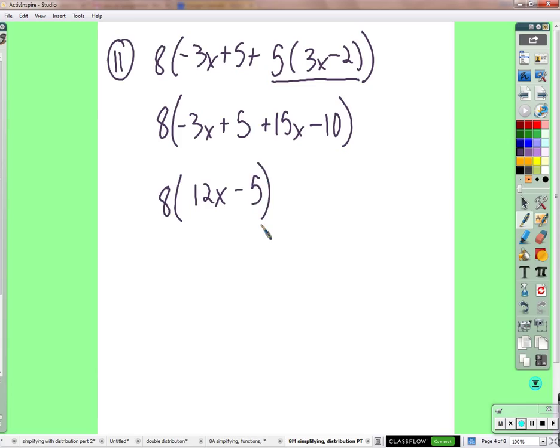And 5 or that should have been a 15. So it's positive 5. 8 times 12 is 96x. 8 times 5 is 40.